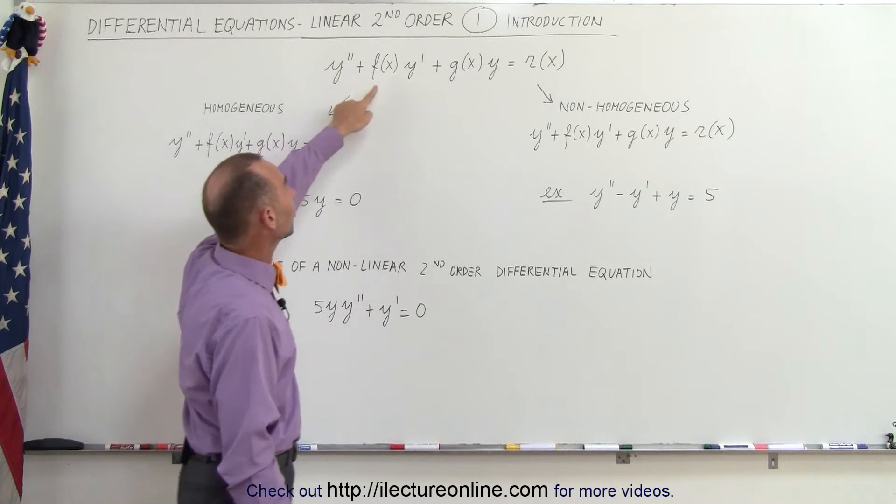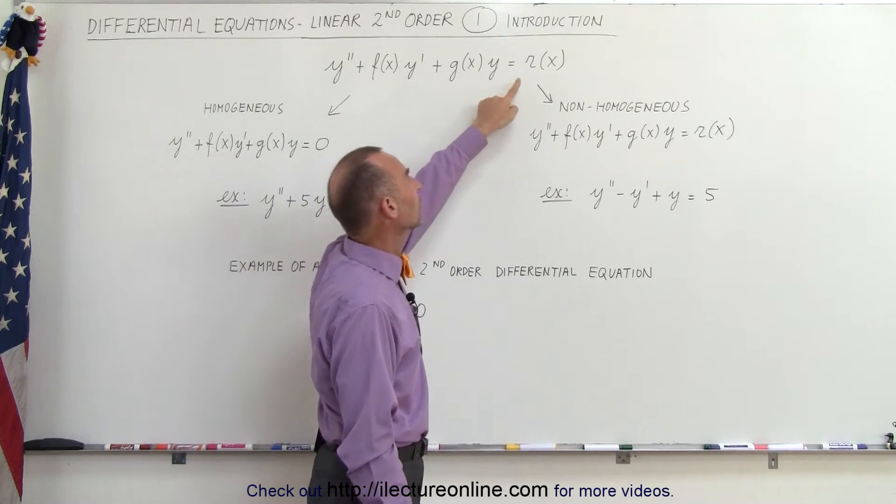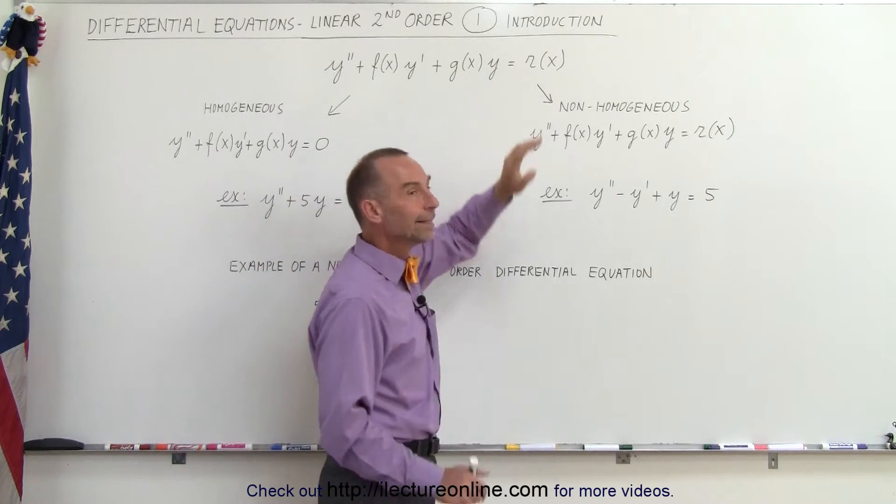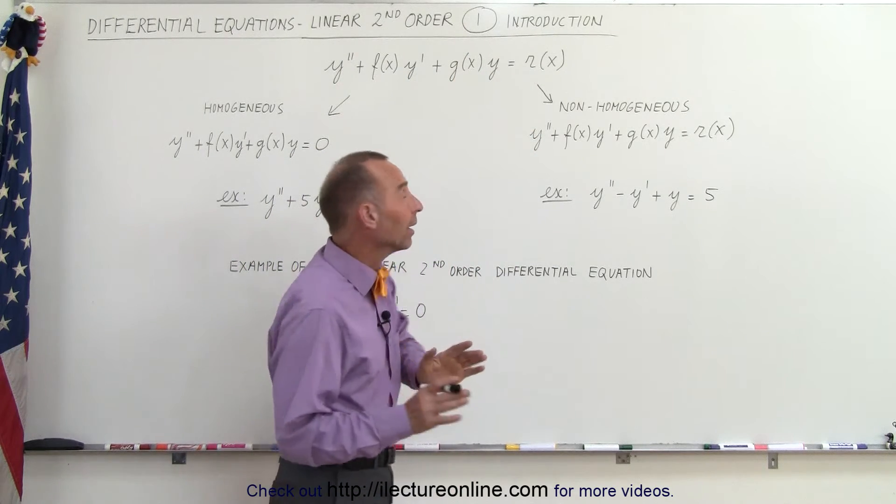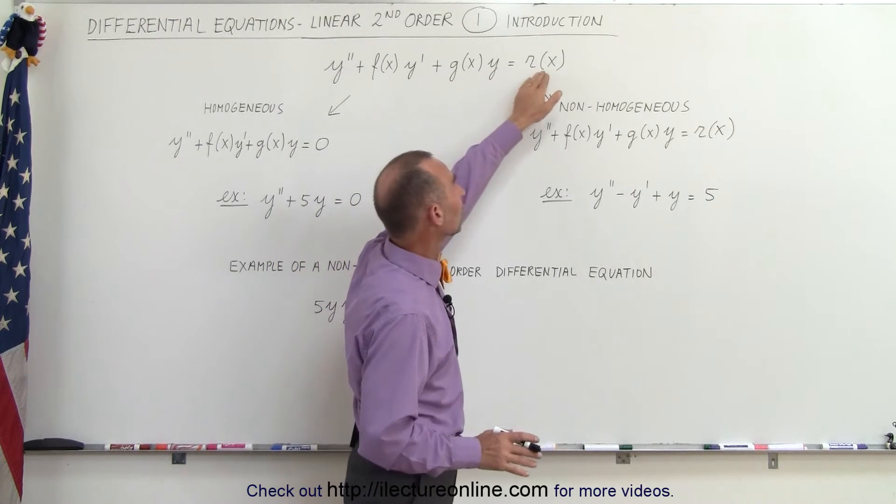It is y double prime plus f of x times y prime plus g of x times y equals r of x. Now notice that these are all functions of x only, not of x and y or of y. So this can only be a function of x, this can only be a function of x, and this can only be a function of x.